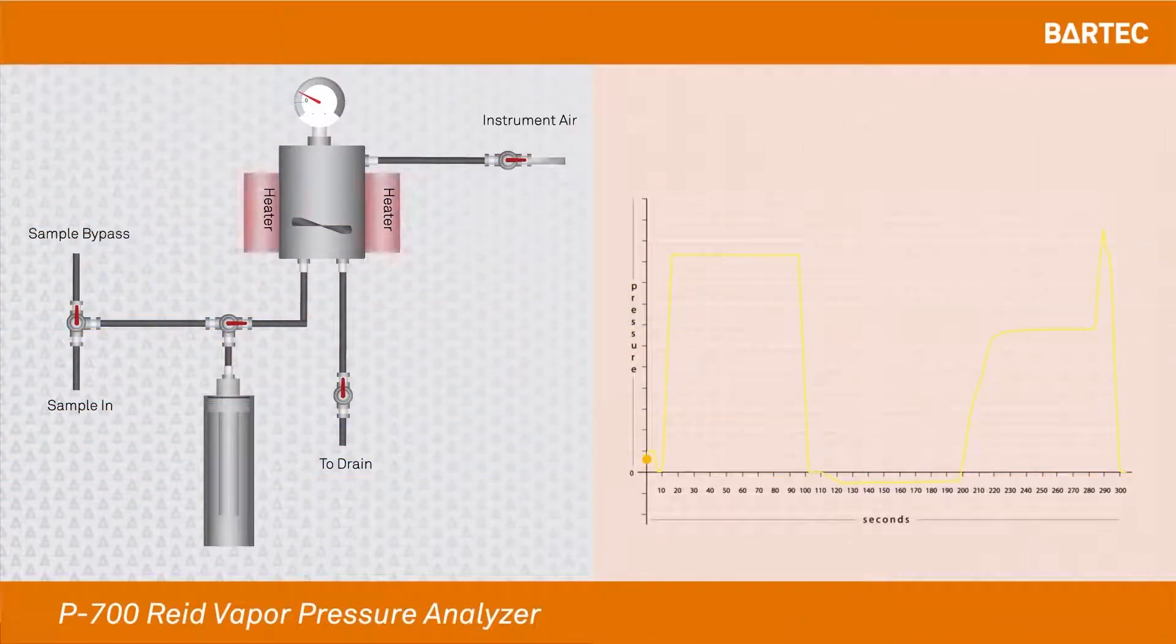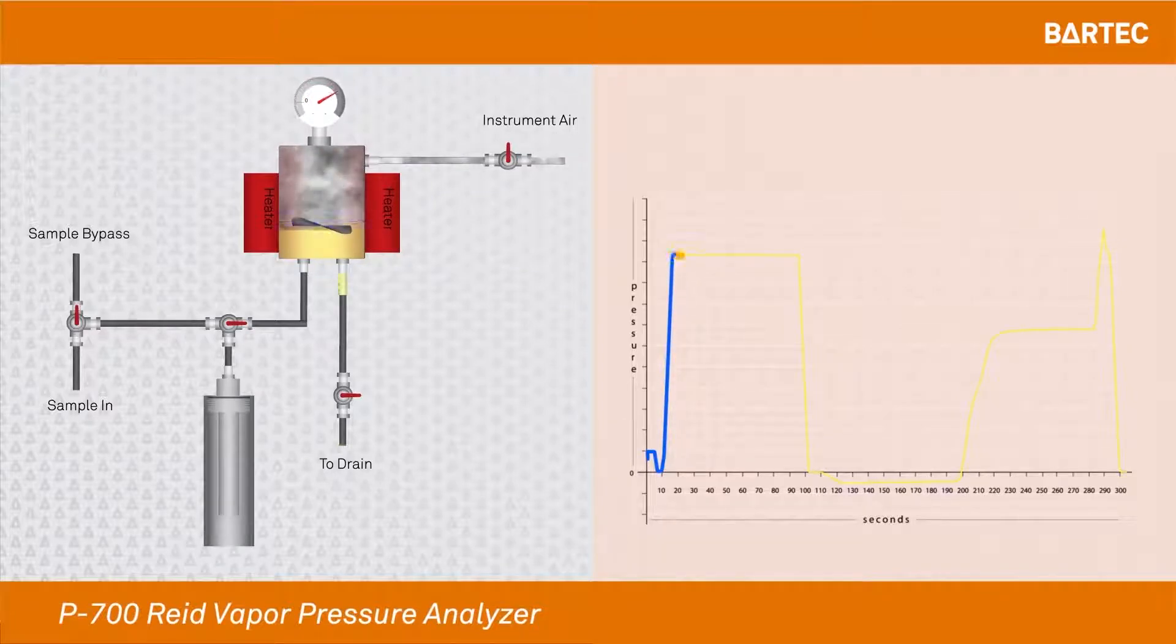In this animation, you will see to the right a graph of the pressure gauge as the pressure changes inside the measuring cell. The first step of the measurement is to bring the measuring cell to 100 degrees Fahrenheit at which it will be maintained throughout the entire process. Once the cell has reached 100 degrees Fahrenheit, we will open the drain to remove any vapors left inside the measuring cell.